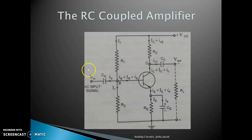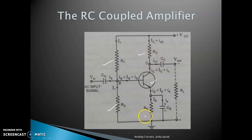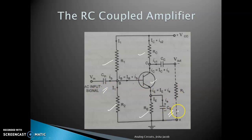The RC coupled amplifier circuit looks like this. You have the BJT and a voltage divider bias, which we have already seen. You have the collector capacitance and the emitter resistance. In addition to that, you see we have three capacitors: input capacitor C-in, emitter bypass capacitor C-E, and the coupling capacitor C-C at the output.